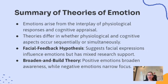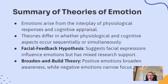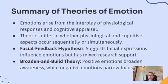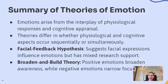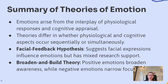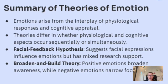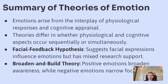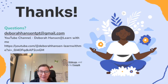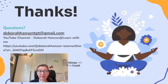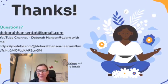Before we end the video, let's summarize all the theories of emotion we've learned. Emotions arise from the interplay of physiological responses and cognitive appraisal. Theories differ in whether physiological and cognitive aspects occur sequentially or simultaneously. The facial feedback hypothesis suggests that facial expressions influence emotions, but has mixed research support. And lastly, the broaden and build theory: positive emotions broaden awareness while negative emotions narrow focus. That's all the essential knowledge you need to know for 4.7 Emotion, and the CD question: explain how theories of emotion apply to behavior and mental processes.